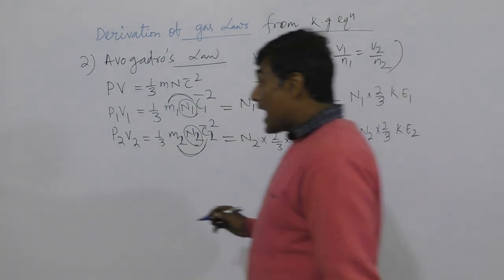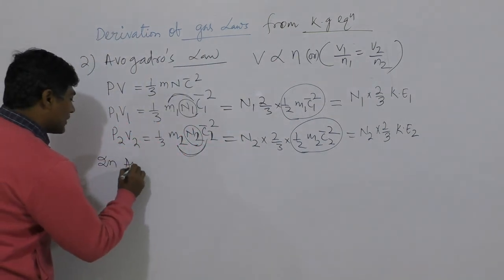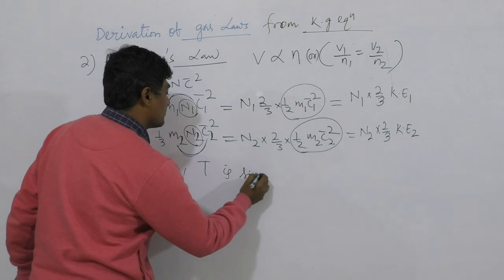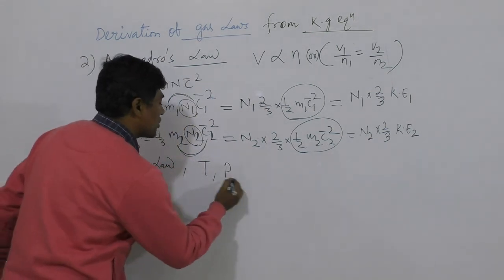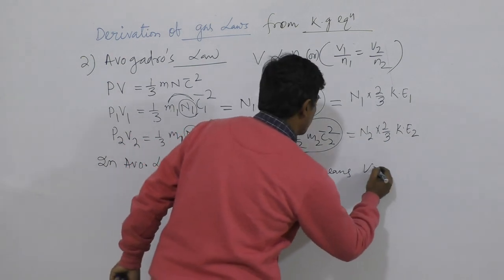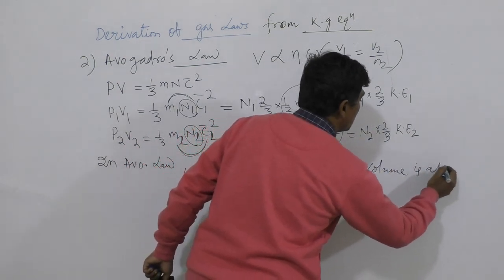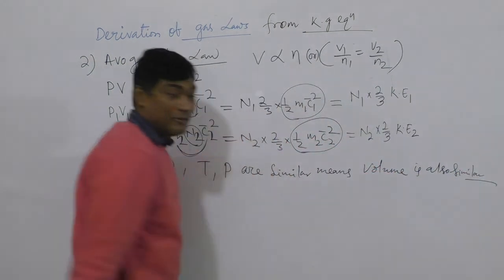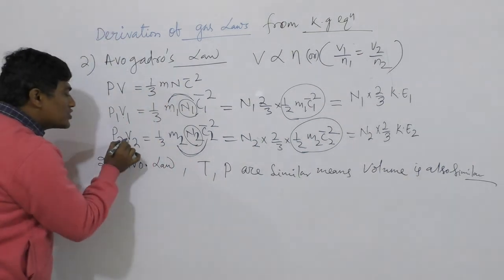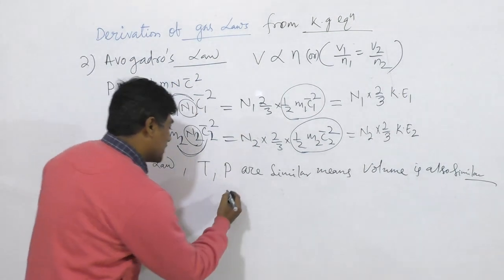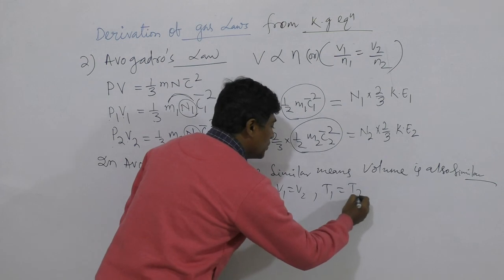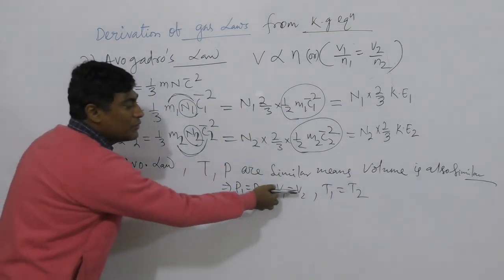In Avogadro's law, temperature and pressure are similar, which also means the volumes are similar. If P1 equals P2, V1 equals V2, and T1 equals T2, then P1V1 equals P2V2.